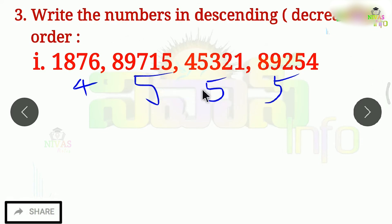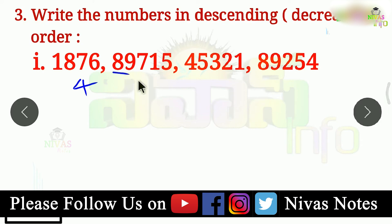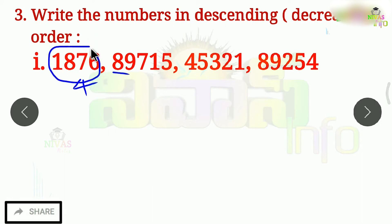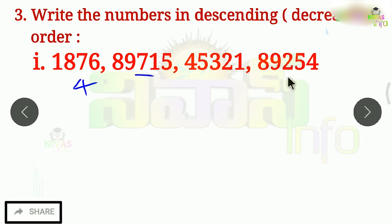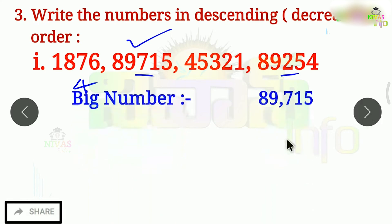If we find out how many digits are big or small, we will determine 2 equal numbers. Starting number is 8, and the number of 2 is 9. Here we have 7 and here we have 2. So we will determine which is bigger and which is smaller. This is our biggest number: 89,715.